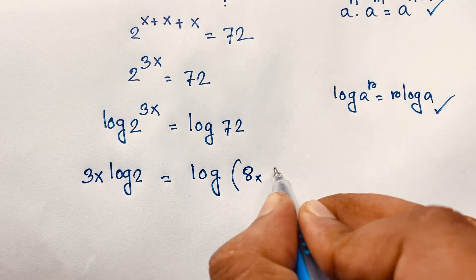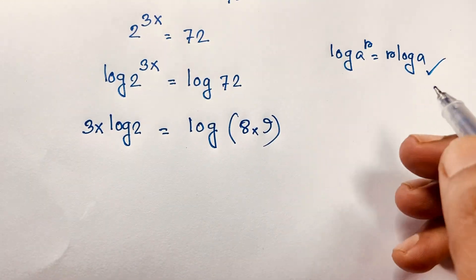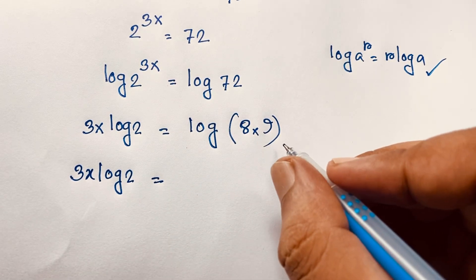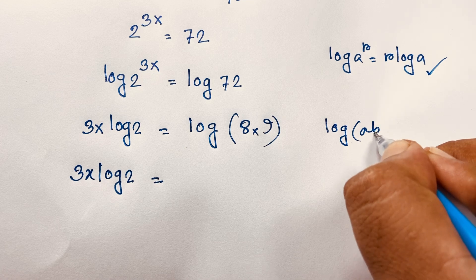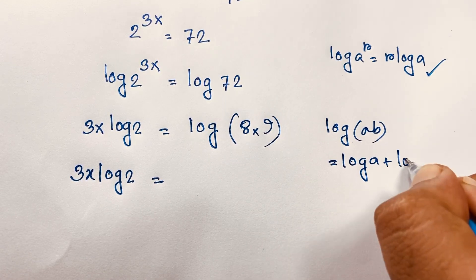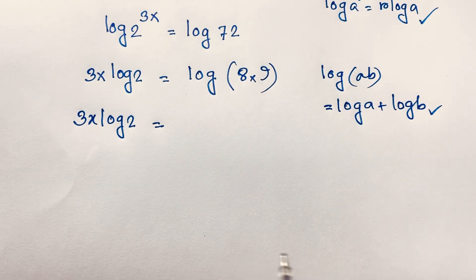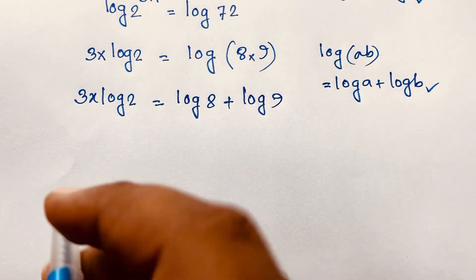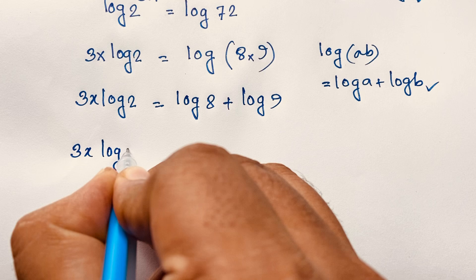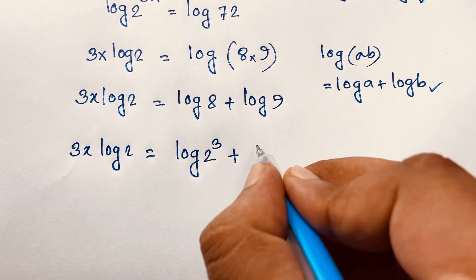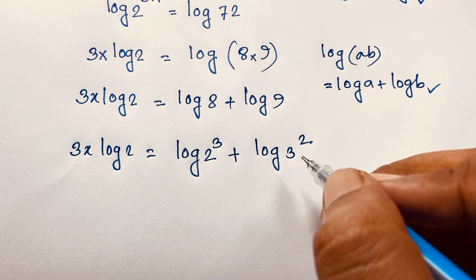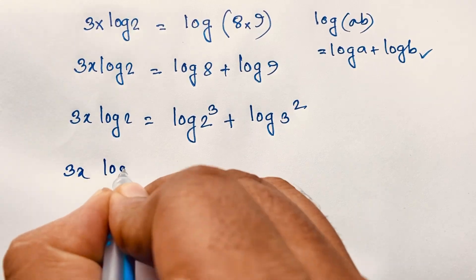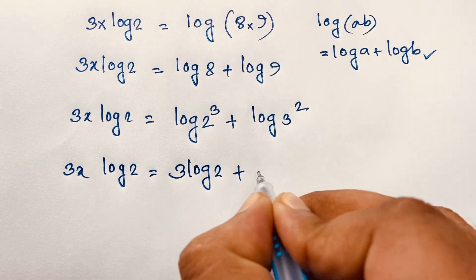Now, log 72 — we note that 8 times 9 equals 72. So 3x·log 2 equals log(8 × 9). Applying the product rule log(ab) = log a + log b, this becomes log 8 plus log 9. Since 8 is 2 to the power 3 and 9 is 3 to the power 2, we apply the power rule again: 3x·log 2 equals 3·log 2 plus 2·log 3.